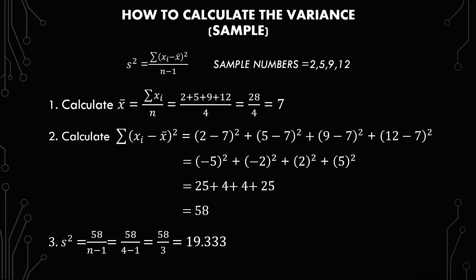The last thing here is to just put it all back into the formula. So we have s squared equals 58 over n minus 1, which equals 58 over 4 minus 1, which equals 58 over 3, which equals 19.333.